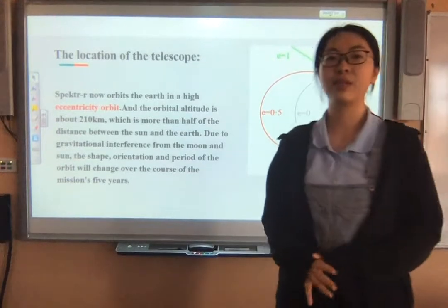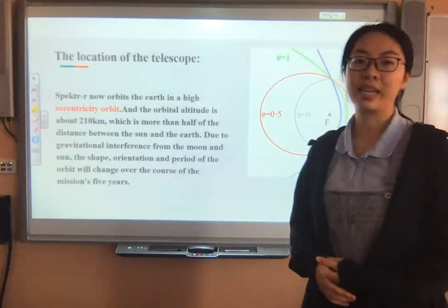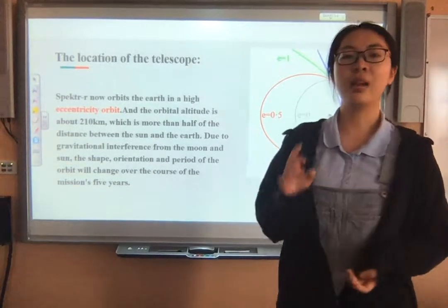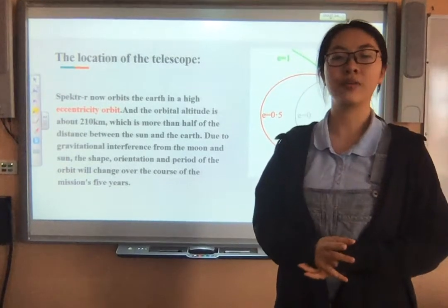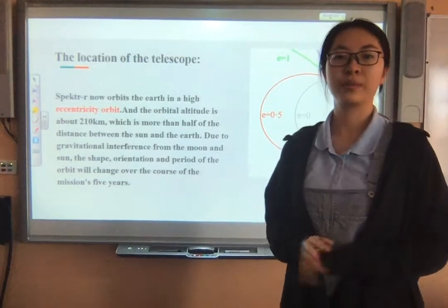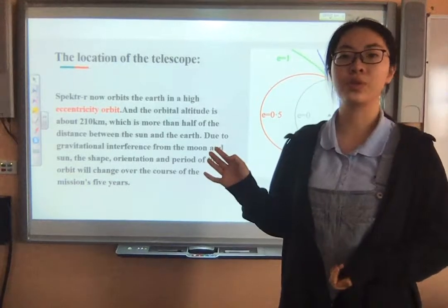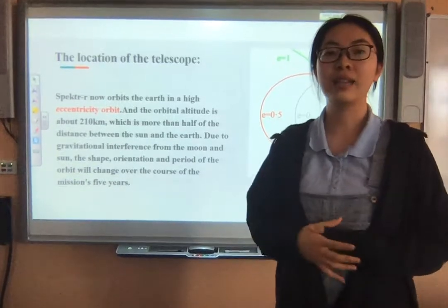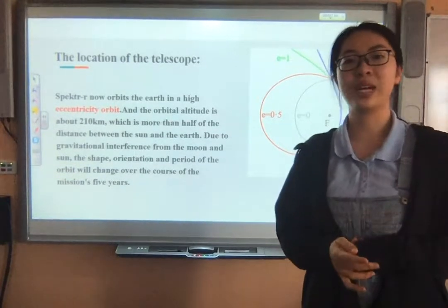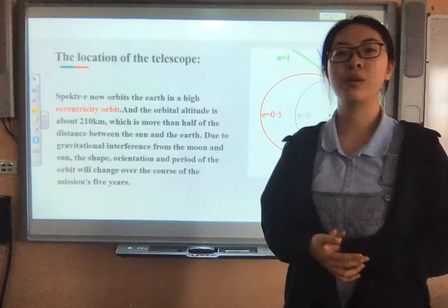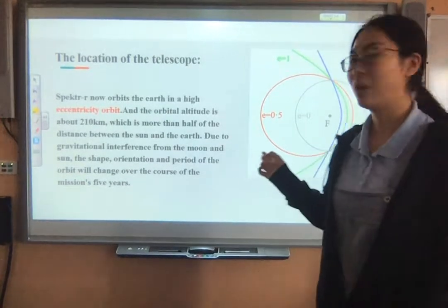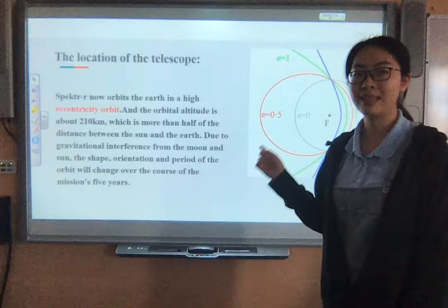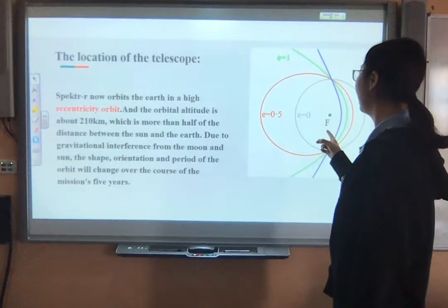The second part is about the orbital placement. After two firings of the upper rocket stage, Spectra-R is now opposite Earth in a high eccentricity orbit. Here I want to introduce the idea of orbital eccentricity. Orbital eccentricity is an important parameter that defines the orbit shape. Eccentricity can be interpreted as the degree to which a shape deviates from a circle. As e equals zero, it is a circle, and as e is greater than zero but less than one, it is an ellipse.